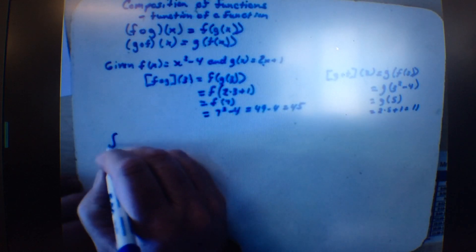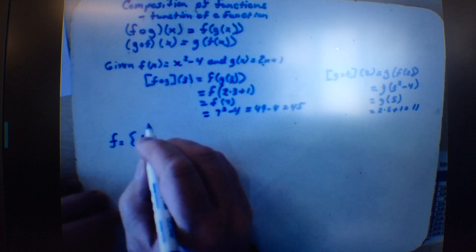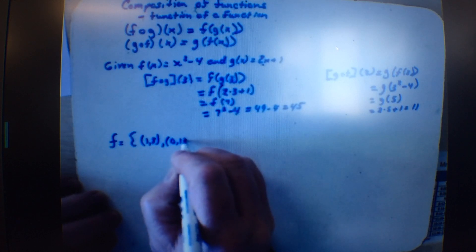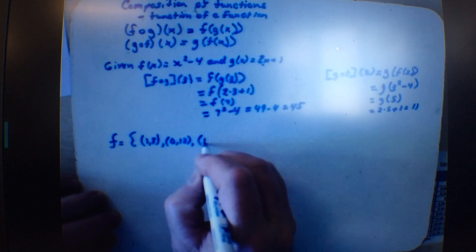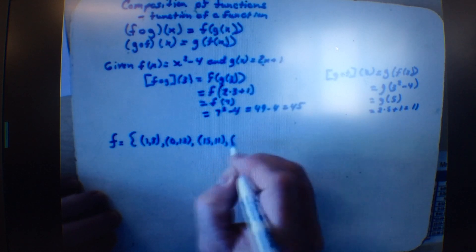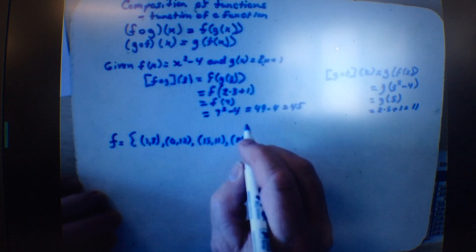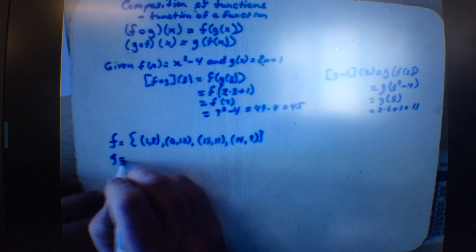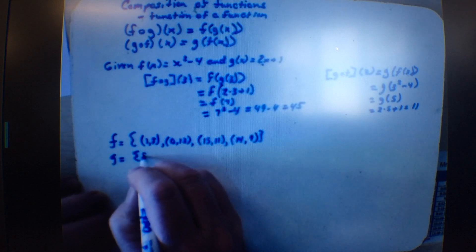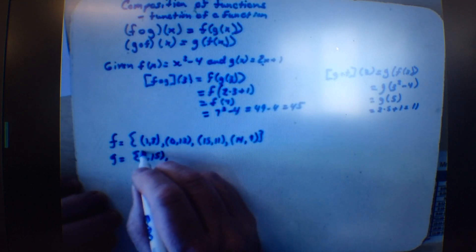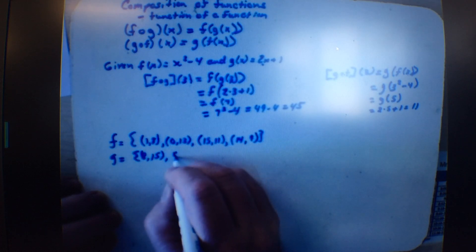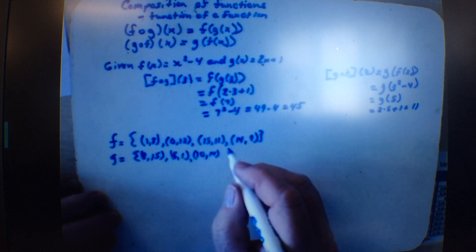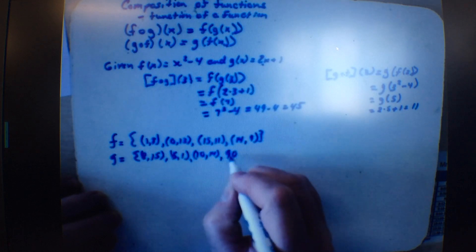Let's say we have a function written as a set of ordered pairs. The f function is: (1, 8), (0, 13), (15, 11), (14, 9). And then we have a g function: (8, 15), (5, 1), (10, 14), (9, 0).